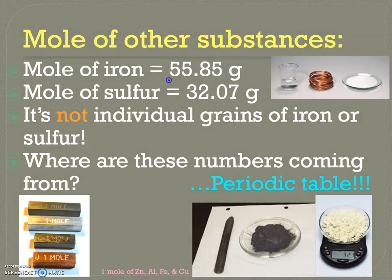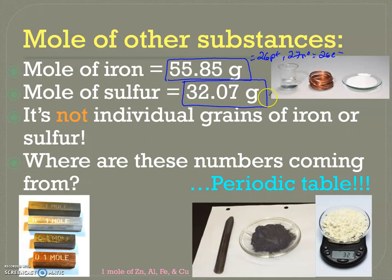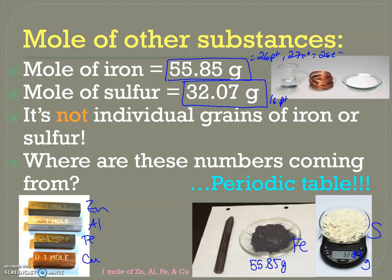So you'll see that a mole of each substance isn't necessarily going to weigh the same. A mole of iron is 55.85 grams; a mole of sulfur is 32.07 grams. Iron is element 26 on the periodic table with 26 protons; sulfur is element 16. Looking at a mole of zinc, aluminum, iron, and copper — they're all different masses, but very specific numbers. Where do these numbers come from? From our best friend, the periodic table — and we'll talk about that in the next video.